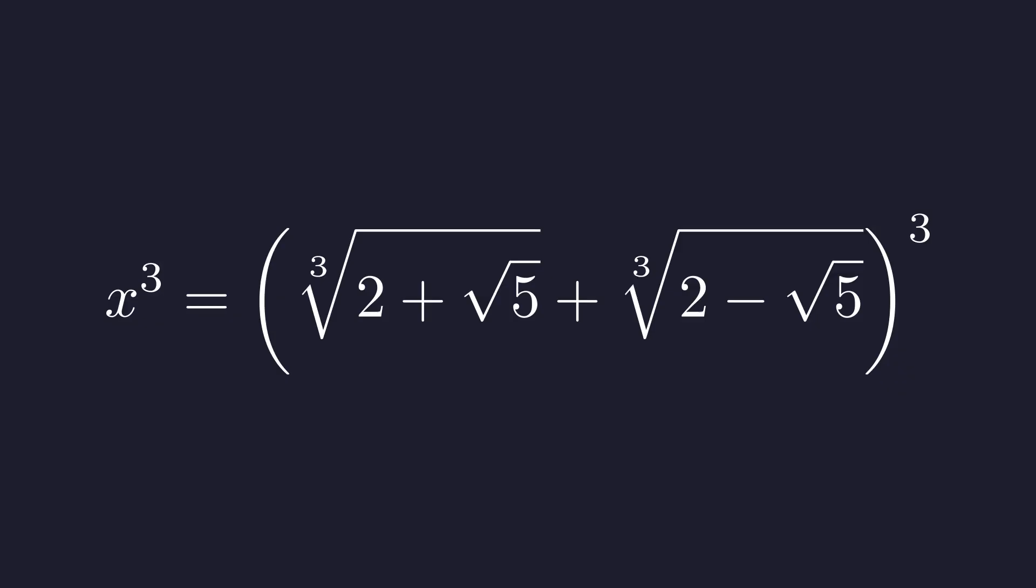Alright, applying that identity to our equation, we'll treat the first cube root as a and the second cube root as b. Watch what happens when we expand this out. The beautiful thing here is that when you cube a cube root, they just cancel out. It's like peeling off the outer layer.